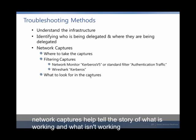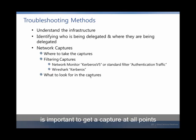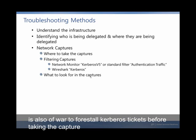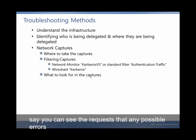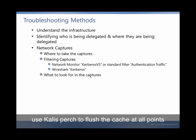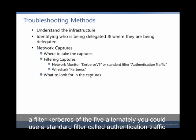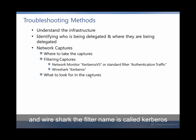Network captures help tell the story of what is working and what isn't working. It is important to get a capture at all points — this includes the client, the middle tier server, and the backend server. It is also important to flush all Kerberos tickets before taking the capture, so you can see the requests and any possible errors. Use KList Purge to flush the cache at all points. Once you have taken the captures, you can filter to show only Kerberos traffic. In Network Monitor, use the filter Kerberos V5, or alternatively use a standard filter called authentication traffic. In Wireshark, the filter name is called Kerberos.